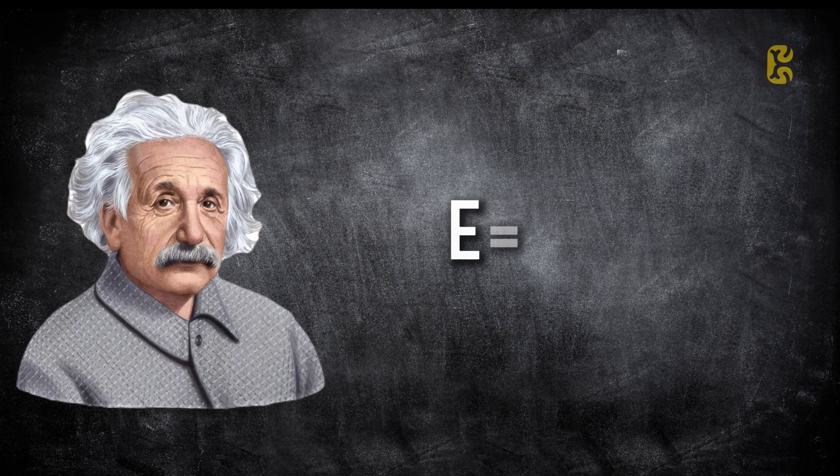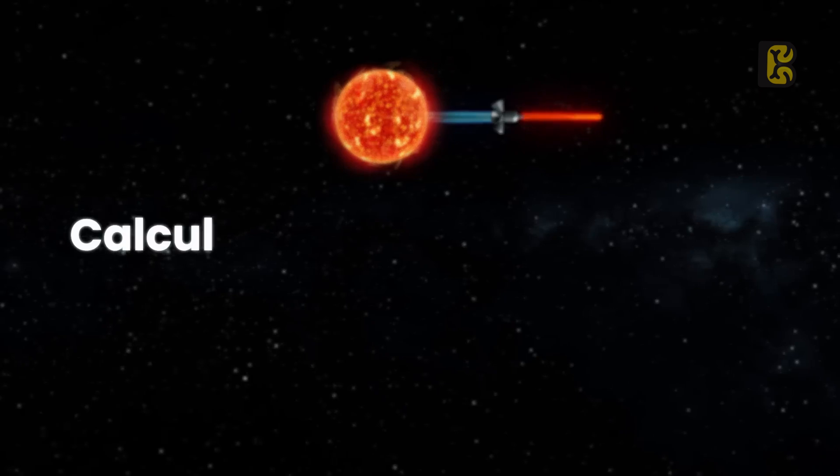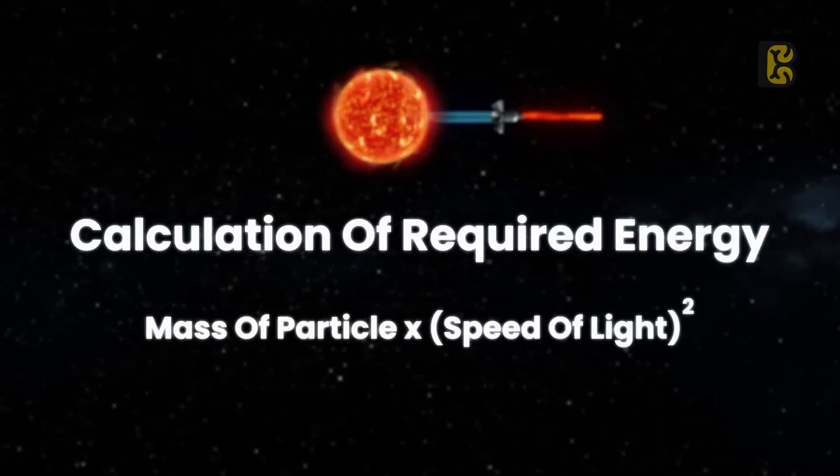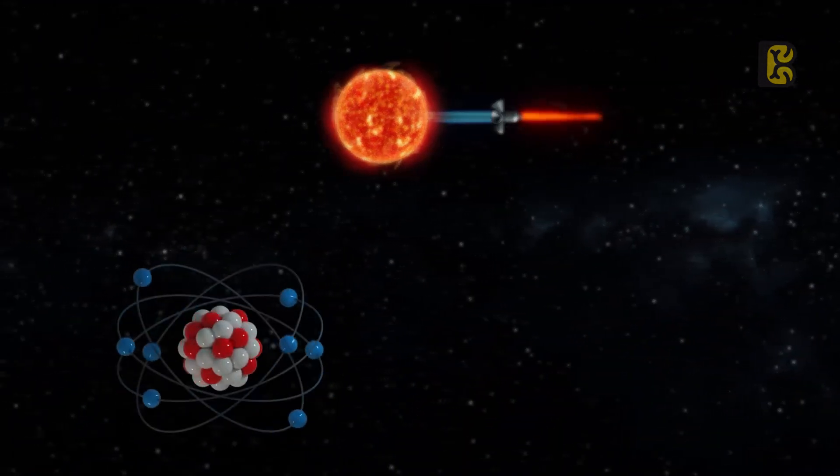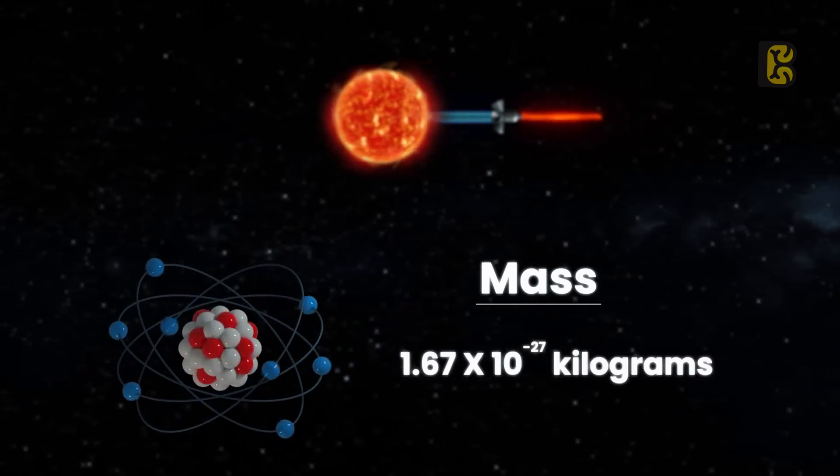Einstein gave the formula E equals MC squared. This means to calculate the required energy, we need to multiply the mass of the particles by the square of the speed of light. So, for instance, if we take a proton as a particle, its mass is 1.67 into 10 to the power minus 27 kilograms.